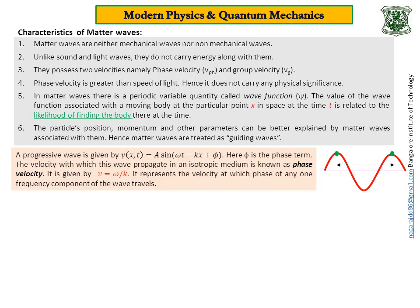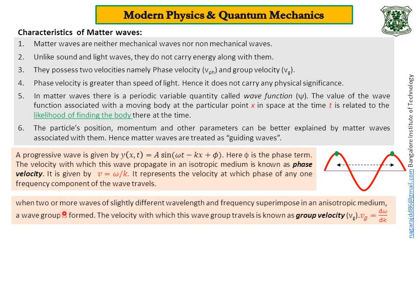Coming to group velocity. When two or more waves of different wavelength and different frequency superimpose in anisotropic medium, a wave group is formed. Remember, wave group is formed only when there is a superposition of two or more different waves. The velocity with which this wave group travels is known as group velocity. And that velocity is given by this equation. It is d omega by dk.